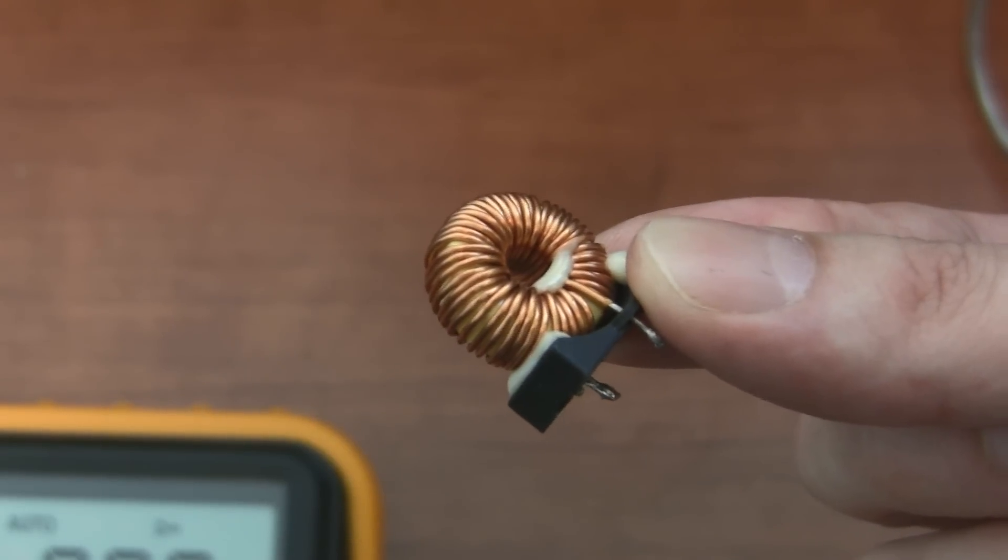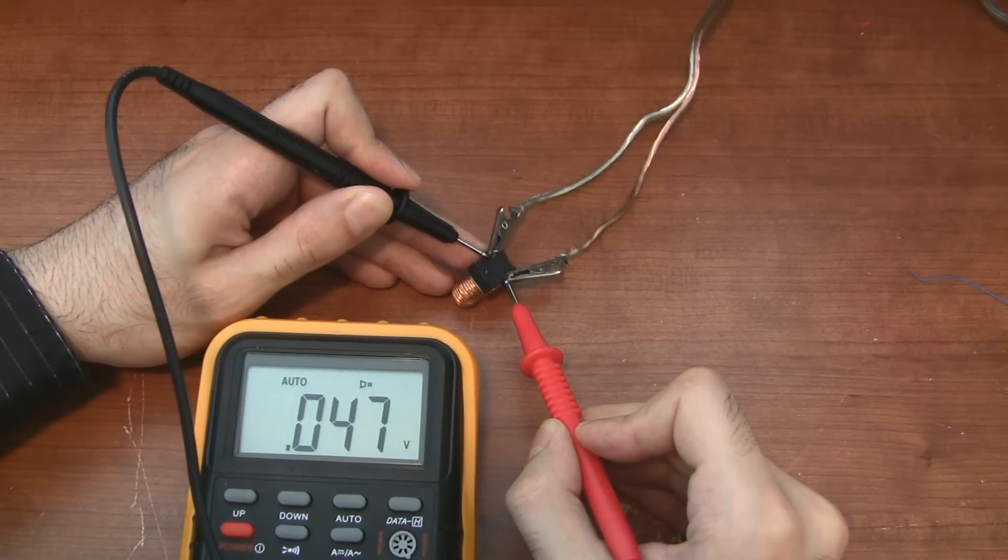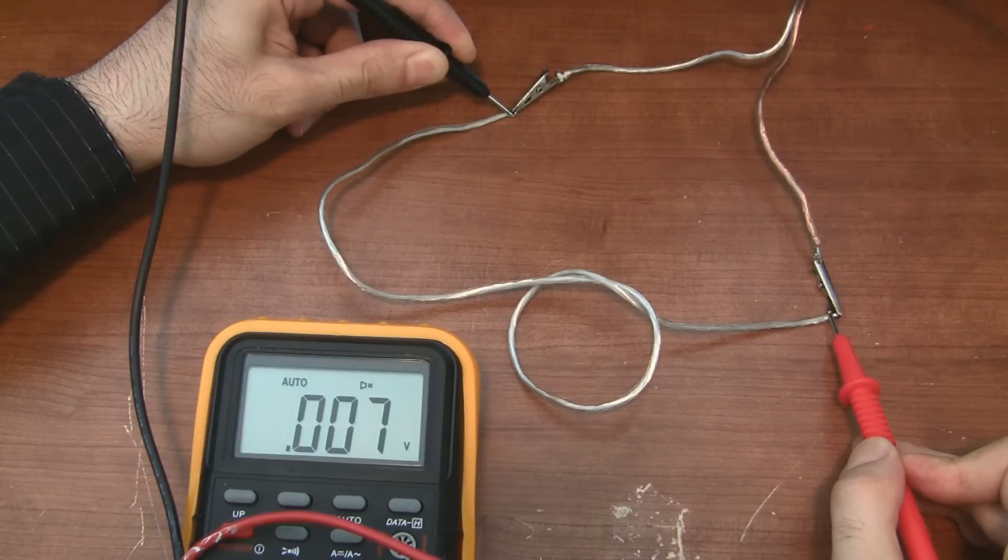Let's measure the resistance of this inductor. 47 millivolts means the inductor has a DC resistance of 47 milliohms. And this piece of speaker wire has a resistance of 7 milliohms.